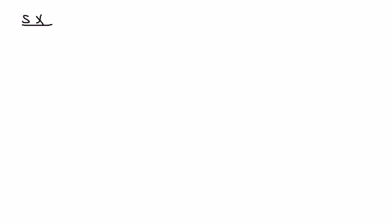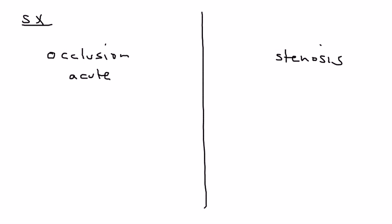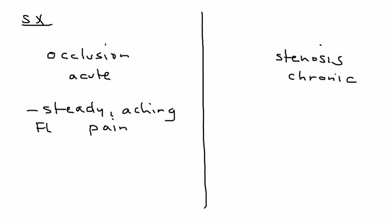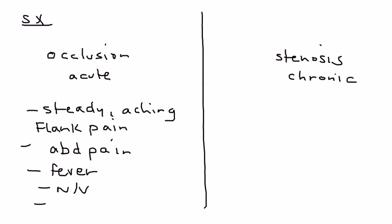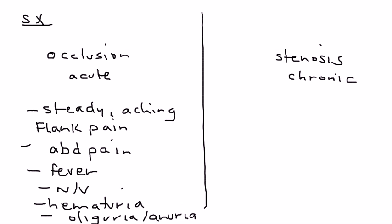Now let's talk about symptoms. If somebody has renal artery pathology, we have to split it up into occlusion and stenosis. Occlusion is an acute event — it happens pretty abruptly. Someone with occlusion will present with aching pain in their flank area, where the kidney lies, sometimes described as back pain. They may also have abdominal pain, fever, nausea or vomiting, hematuria (blood in the urine), and sometimes oliguria or anuria — low or absolutely no urine output.